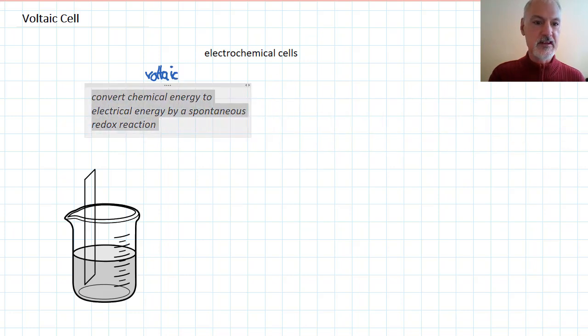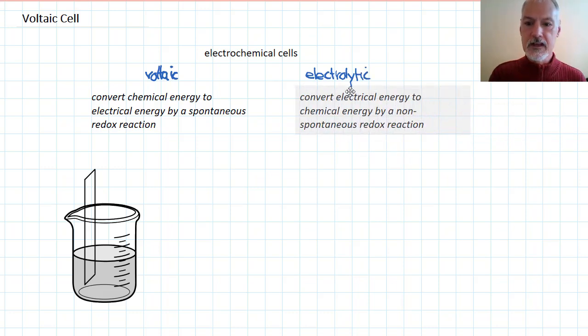The goal of a voltaic cell is to take chemical energy and convert it into electrical energy by means of a spontaneous redox reaction. In our next program, we'll take a look at what are called electrolytic cells, and their purpose is sort of a converse. The idea is to convert electrical energy into chemical energy by means of a non-spontaneous redox reaction.